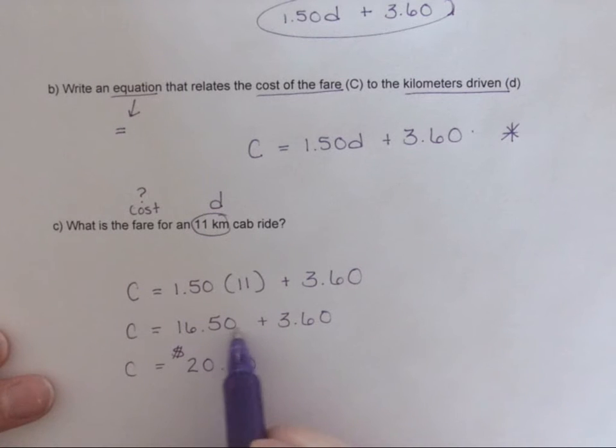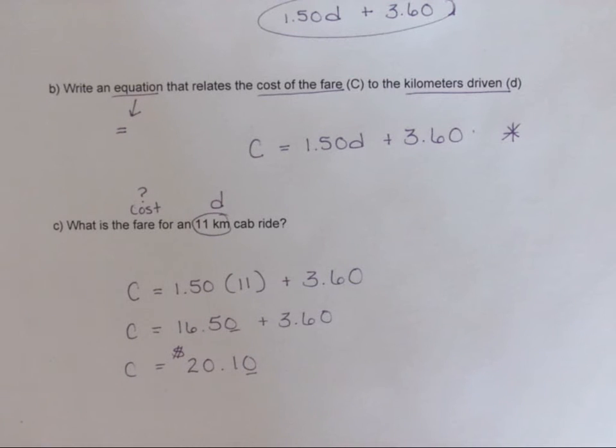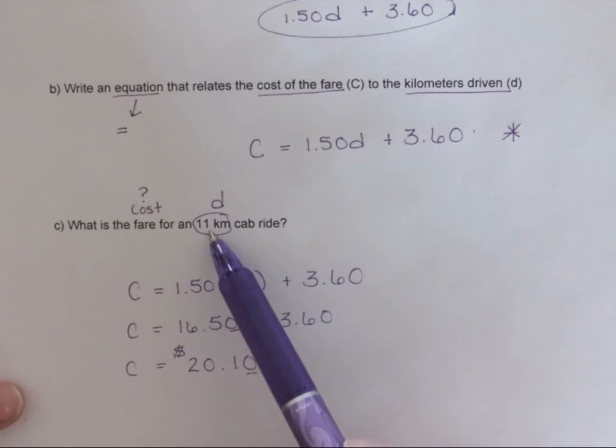Now I did some of that on my calculator and it didn't give me this zero, it didn't give me this zero, and it didn't give me this zero because in the calculator it doesn't know you're dealing with money. But we know we're dealing with money, we know we're paying with Canadian cash, so we're going to have our dollar sign and we have to have two decimal places for money. So just keep that in mind as well. So for an eleven kilometer cab ride it's going to cost me twenty dollars and ten cents.